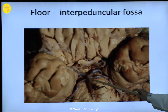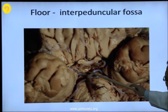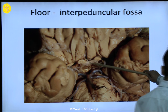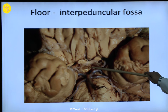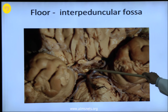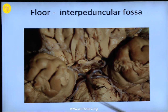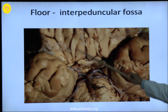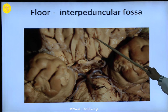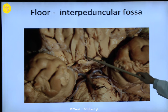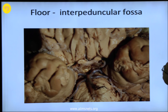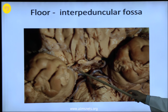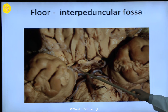Here is the floor of the third ventricle: the basilar artery bifurcating into the posterior cerebral artery, the P1 segment, the optic nerve, optic chiasma, mammillary bodies nicely seen, and the tuber cinereum with the pituitary stalk. The uncus is nicely visible here, the olfactory tracts, olfactory bulb, and the gyrus rectus. The internal carotid arteries with the posterior communicating artery are also seen.